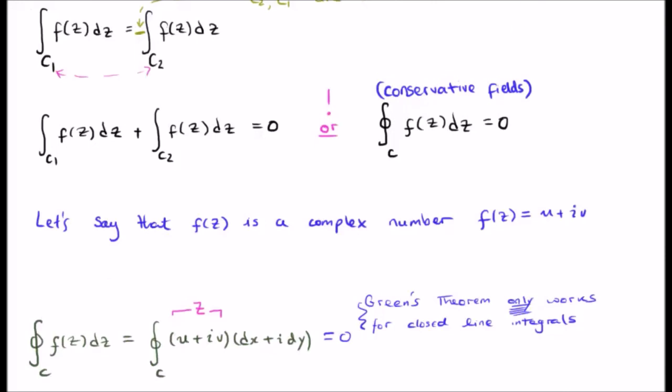Earlier we noted that f is equal to u plus i times v. So let's plug this into our expression. We say that z is equal to u plus iv, and we have dx plus i dy is equal to dz.